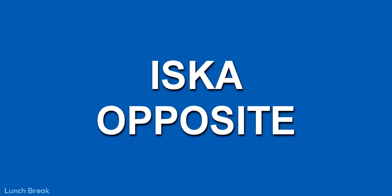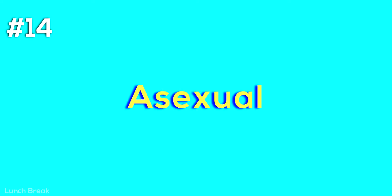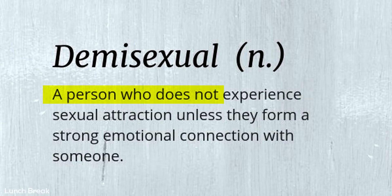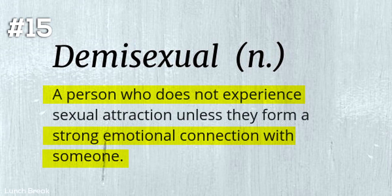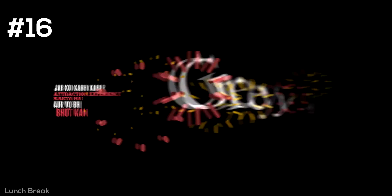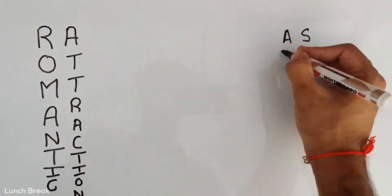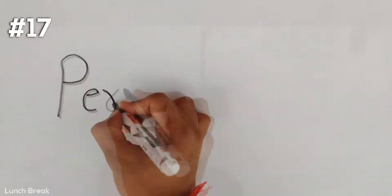Androsexual refers to attraction toward masculine people or traits. The opposite is gynosexual, which refers to attraction toward feminine people or traits. Asexual people may still have a sexual attraction when they form a strong emotional bond — this is known as demisexual. Demisexual people have romantic attraction and a very limited or grey-area sexual attraction to both genders.